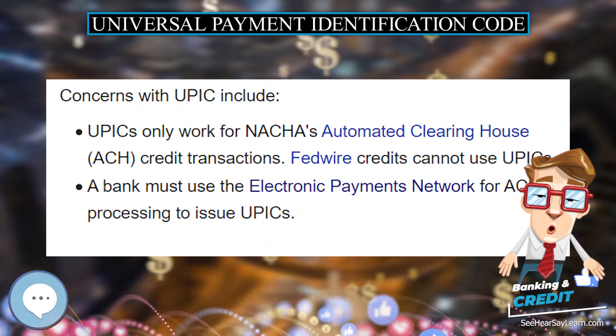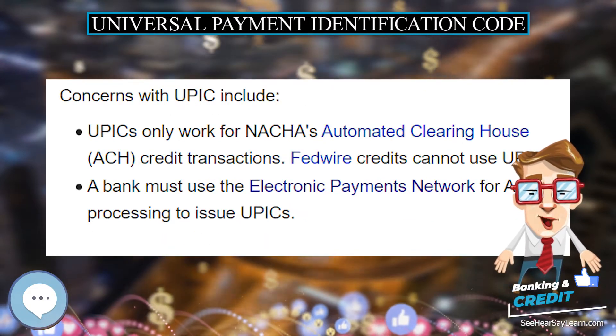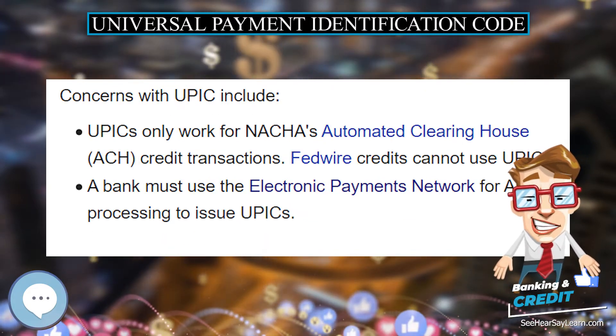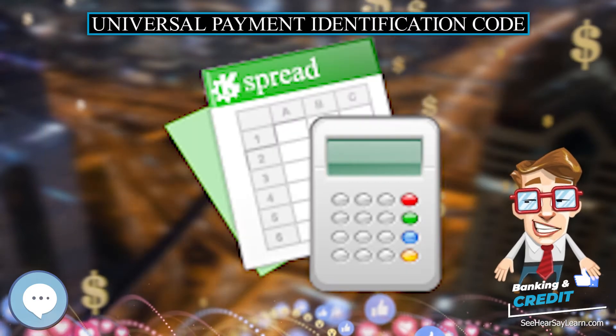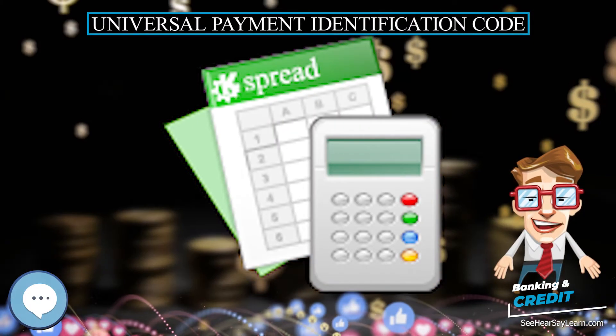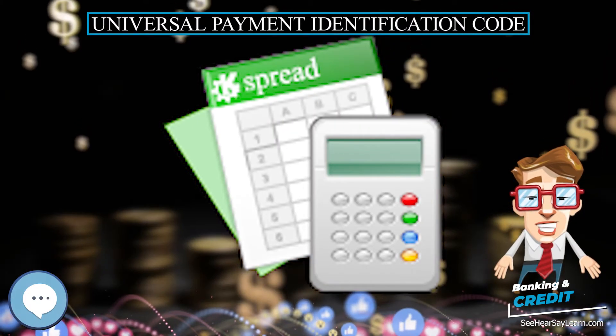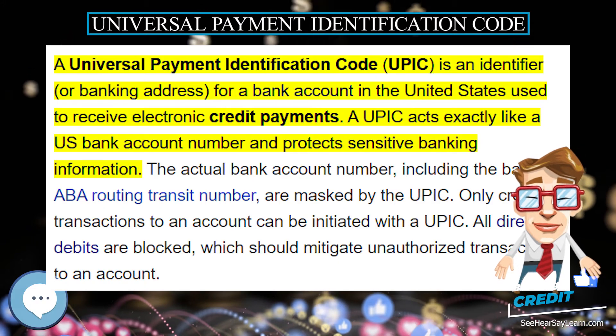A UPIC acts exactly like a U.S. bank account number and protects sensitive banking information. The actual bank account number, including the bank's ABA routing transit number, are masked by the UPIC.